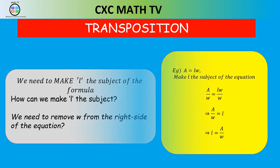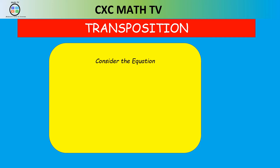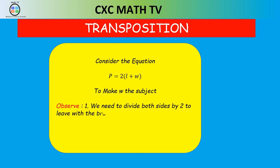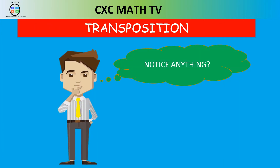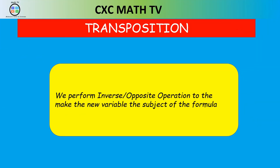Consider this equation: P equals 2 times (L plus W). We know this is the formula for the perimeter of a rectangle. The question says to make W the subject. We need to divide both sides of the equation first by 2, to get rid of that 2 times (L plus W), then subtract L. What you should have noticed is that we perform the inverse operation to make the new variable the subject of the formula.